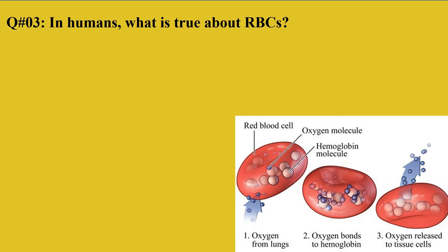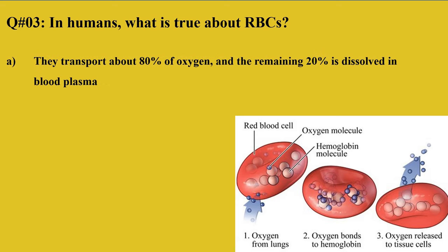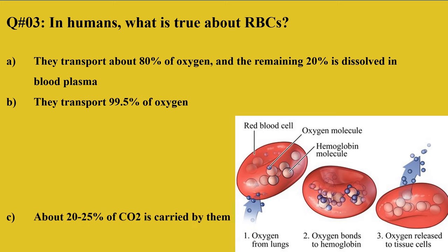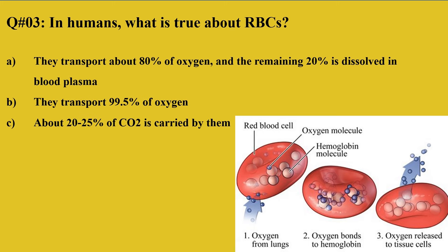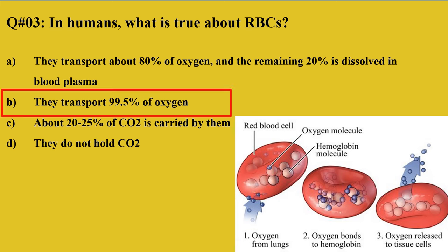Question 3: In humans, what is true about RBCs in regards to respiration? A: They transport about 80% of oxygen and the remaining 20% is dissolved in blood plasma. B: They transport 99.5% of oxygen. C: About 20-25% of carbon dioxide is carried by them. D: They do not hold carbon dioxide. The right option is B — RBCs transport 99.5% of oxygen, attached to the hemoglobin molecule, and are carried from the lungs to the cells of our body.